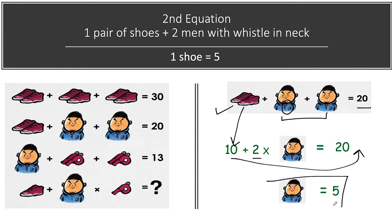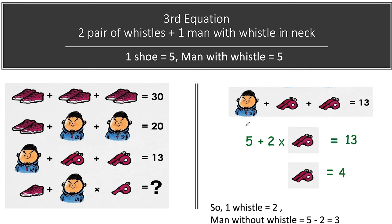The final value for a man wearing a whistle is 5. Moving to the third equation, we have a single man wearing a whistle and two whistles — one whistle is behind and one whistle is at the front — and their total value is equal to 13.